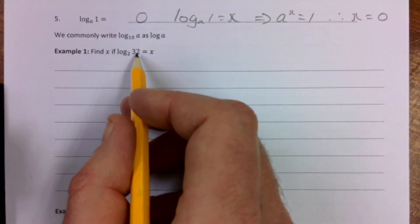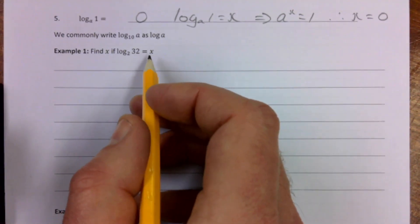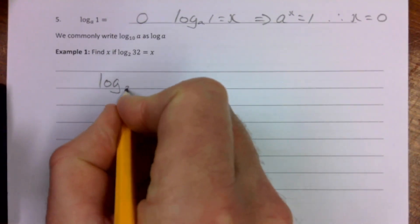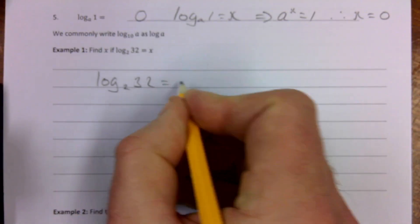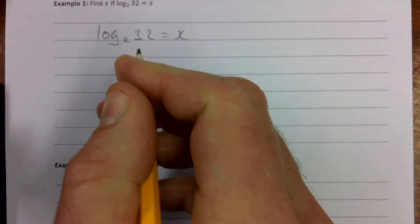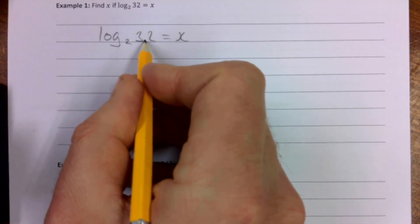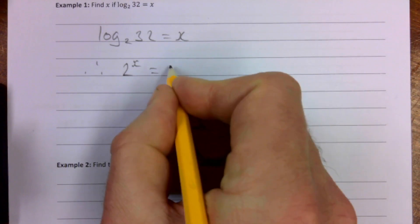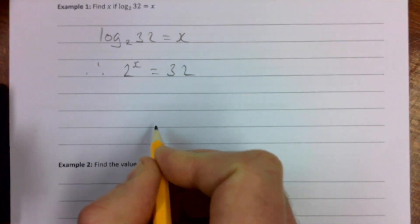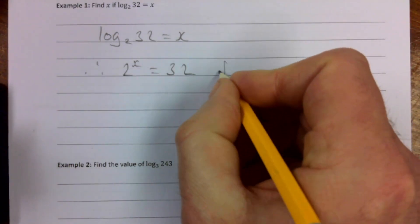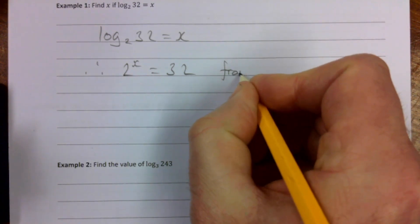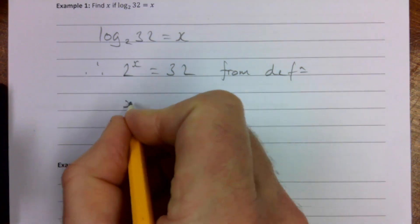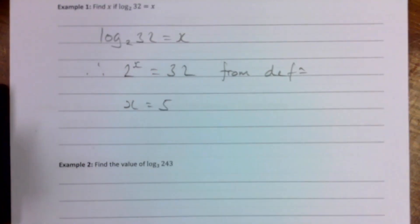Find x if log to the base 2 of 32 equals x. We'll just use what a log means. Log to base 2 of 32 is x means 2 to what power gives me 32? I.e. 2 to the power of x is 32. That's just from our definition. And the answer to that then is x equals 5.